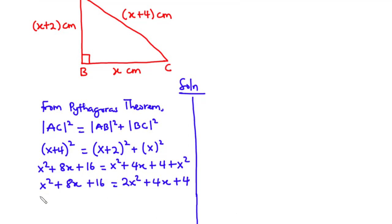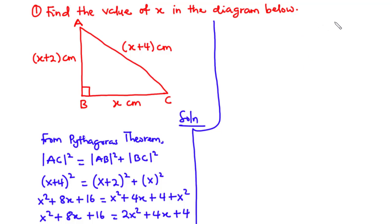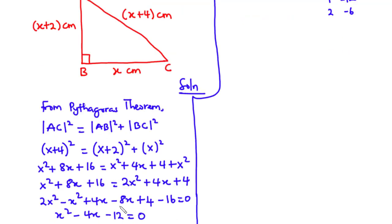Transposing all terms to the right-hand side gives 2x² − x² + 4x − 8x + 4 − 16 = 0, which simplifies to x² − 4x − 12 = 0. The coefficient of x² is 1 and the constant term is −12. We look for factors of −12 that add up to −4, which gives us 2 and −6.